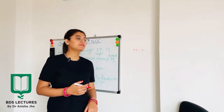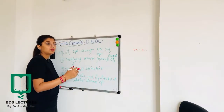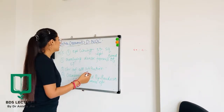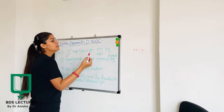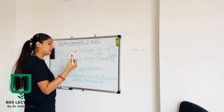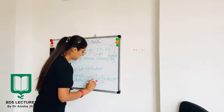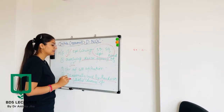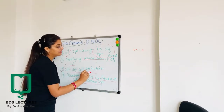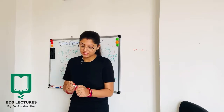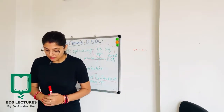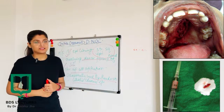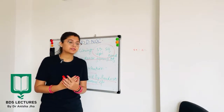Regarding histological features, the median palatal cyst has an epithelial lining along with a dense fibrous band of connective tissue. The type of epithelial lining is stratified squamous epithelium, and occasionally it can also be lined by pseudostratified ciliated columnar epithelium. The overlying dense fibrous band of connective tissue is present along with chronic inflammatory cell infiltration. Treatment involves surgical removal and thorough curettage.